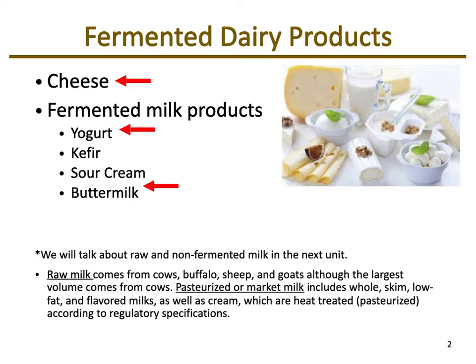In general, when we have milk that we're going to consume, it's been pasteurized — this is known as market milk. It comes in different varieties: whole, skim, low-fat, or flavored milks, or even creams. Whether it's whole or skim or low-fat depends on the fat content, which can be altered to have different levels of fat concentration. Raw milk hasn't been treated to alter its fat concentration.